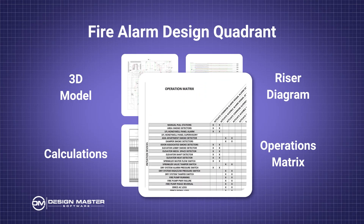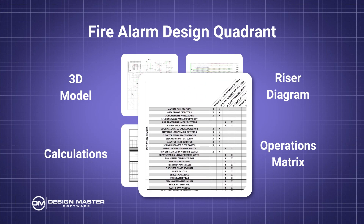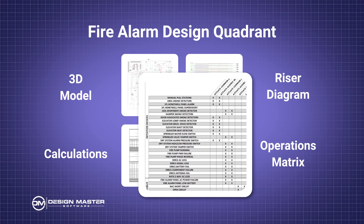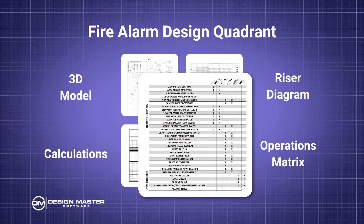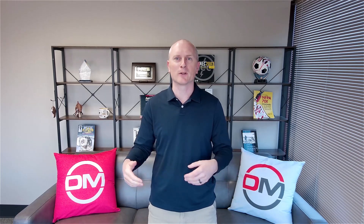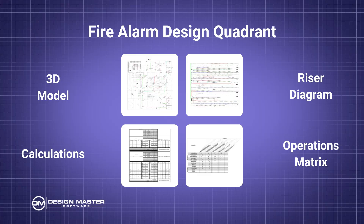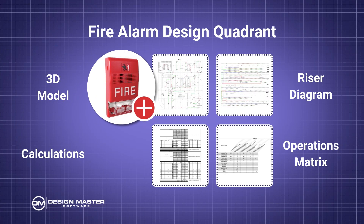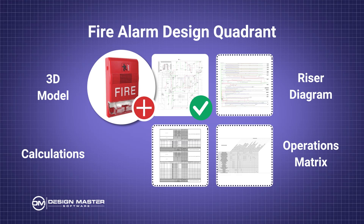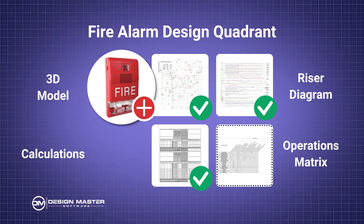The operations matrix — or input-output matrix, or whatever you call it in your designs — is the list of all of the devices that provide inputs to the fire alarm system and then all of the outputs that can happen. The list of inputs and outputs for your system is a function of the specific devices you are inserting in the design. If you add a device in your 3D model, you need to make sure it shows up in 3D and also on the floor plan. That needs to be added to the riser, included in the calculations, and if it's a new type of device, you might need to add another row or column to the operations matrix to represent that new device.